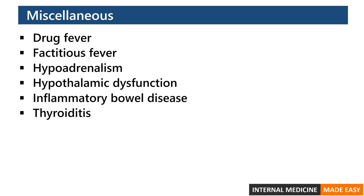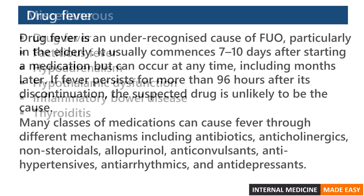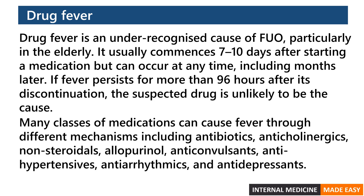Miscellaneous causes include drug fever, factitious fever, hypoadrenalism, hypothalamic dysfunction, inflammatory bowel disease, and thyroiditis. Drug fever is an under-recognized cause of fever of unknown origin, particularly in the elderly. It usually commences seven to ten days after starting a medication but can occur at any time, including months later. If fever persists for more than 96 hours after discontinuation, the suspected drug is unlikely to be the cause. Many classes of medications can cause fever through different mechanisms, including antibiotics, anticholinergics, non-steroidals, allopurinol, anticonvulsants, antihypertensives, antiarrhythmics, and antidepressants.